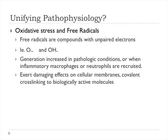Is there a unifying pathophysiology? Each associated condition has its own mechanism, but there has been increasing focus on oxidative stress and free radicals driving the decrease in spermatogenesis. Free radicals are compounds with an unpaired electron — such as superoxide and hydroxyl radical — produced in higher amounts in pathologic conditions, or when inflammatory macrophages and neutrophils are recruited.